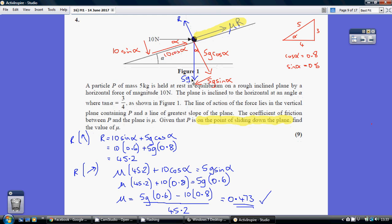Similarly with the weight, I've broken the weight down to being 5G cos alpha and 5G sin alpha. Again, just make sure you're comfortable that this angle here is another alpha.